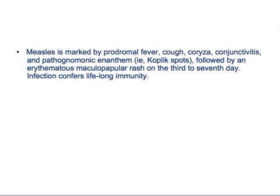Measles runs through four stages: incubation period of seven to fourteen days, prodromal stage with fever, cough, coryza, and conjunctivitis, and a pathognomonic enanthem — a rash on the mucosa known as enanthem, versus exanthem which is on the skin. Koplik's spots are very important. This is followed by an erythematous maculopapular rash on the third to seventh day of infection, and it confers lifelong immunity.